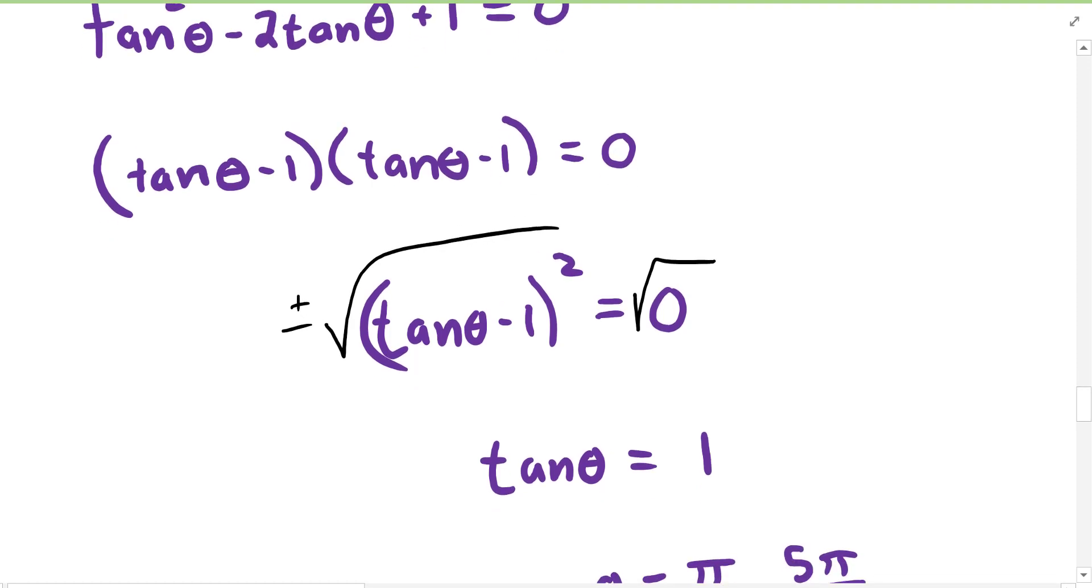When we take the square root of both sides, we get tangent theta is equal to one. When is any value equal to one?